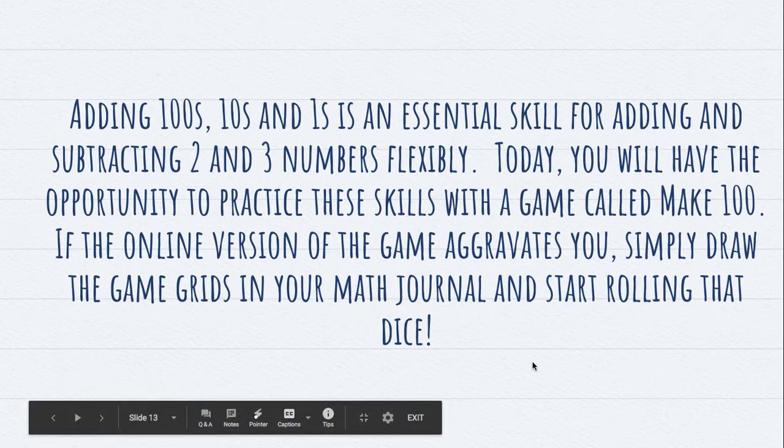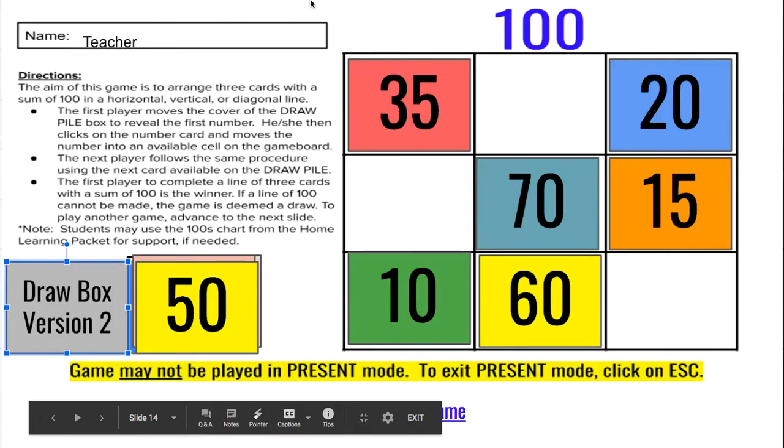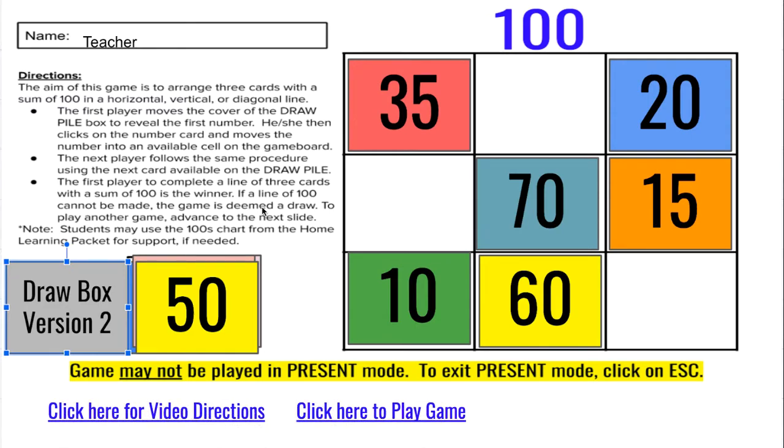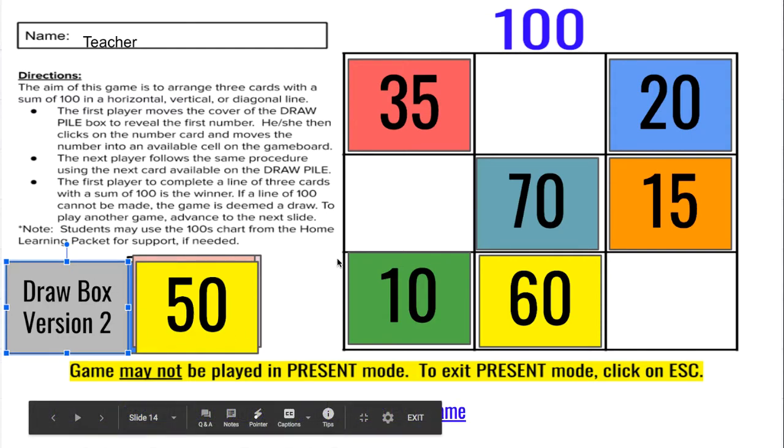Here's a little slide about how important it is to be adding and subtracting. Here's the game that you are going to play. So basically you are trying to make a sum of 100 by putting cards in a row, diagonally, or in a vertical line. And if you need more information on how to play the game, there's directions in your packet, there's directions here, and there's video directions down below.